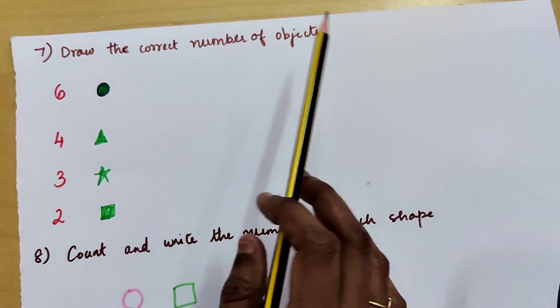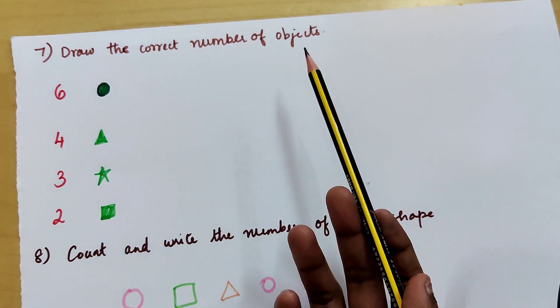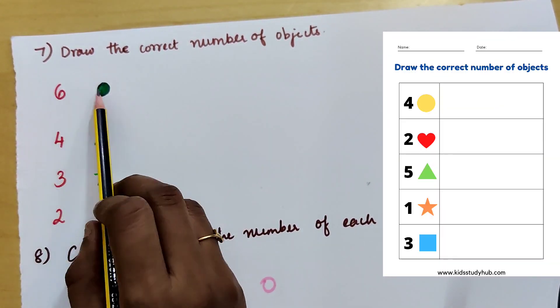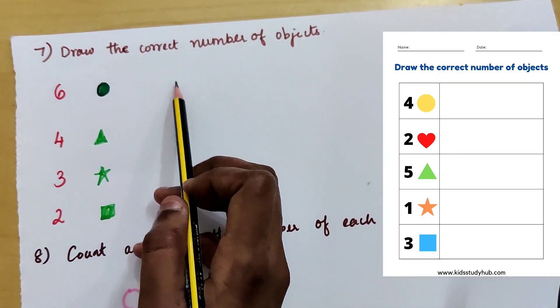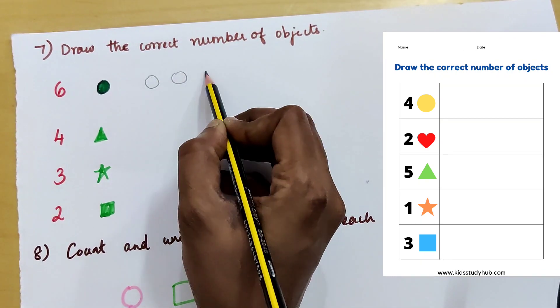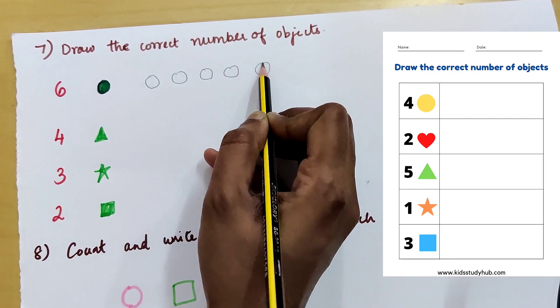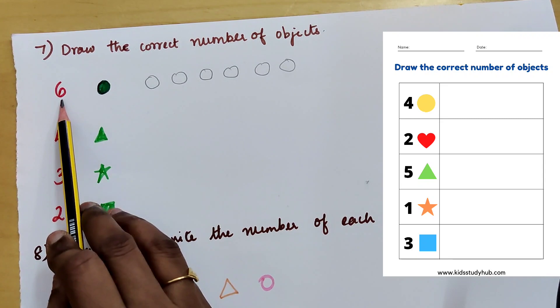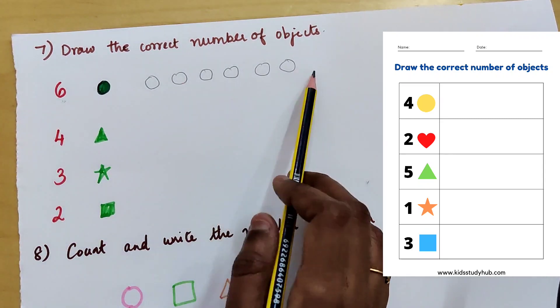Drawing the correct number of objects. So here is 1 to 1 correspondence concept. Here it is 6 circles. So they have to draw 6 circles. 1, 2, 3, 4, 5, 6. So the child must be able to expand the number into that many objects.